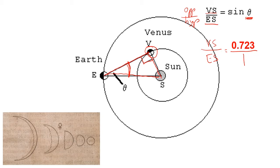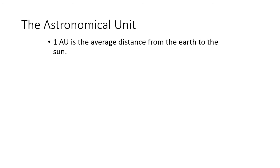Although early astronomers couldn't measure absolute distances, with fairly simple geometry they were able to figure out that Venus is approximately seven-tenths as far away from the Sun as Earth is. In the same way they could figure out the relative distances of other planets from the Sun just by comparing them to Earth's, which leads us to the astronomical unit. The astronomical unit is defined as the average distance from Earth to the Sun. Venus is approximately 0.72 AU from the Sun and Jupiter is just over five times as far away.